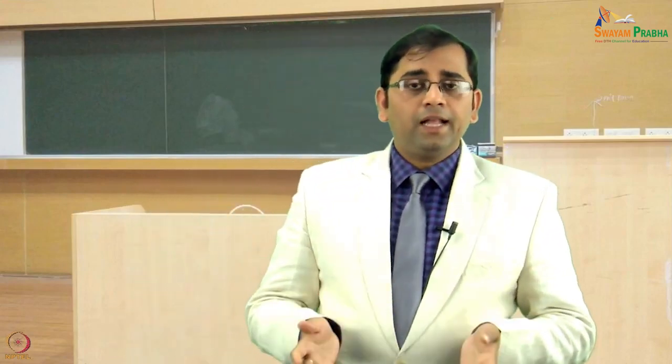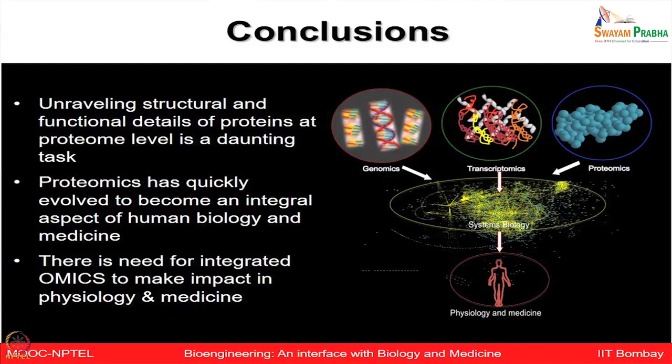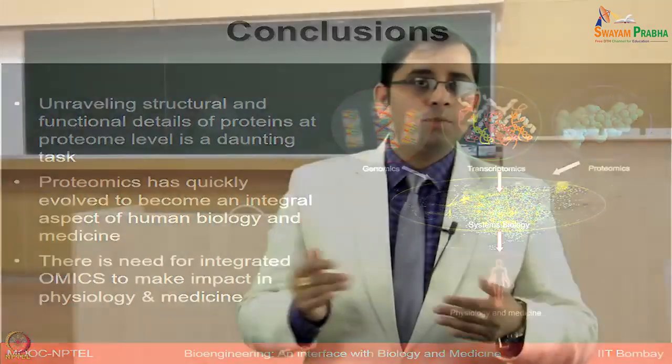In conclusion, today we tried to see the journey from genome to proteome, and some brief comparison of the key differences between genome and proteome. We also looked at many technologies which are part of studying the proteome, starting from gel-based platforms to different advancements in mass spectrometry platforms, different protein microarrays, label-free biosensors, and the emerging field of targeted proteomics. Unraveling the structural and functional details of proteins at the proteome level is a very daunting task. Proteomics has quickly evolved to become an integral aspect of human biology and medicine. However, there is still a need to integrate omics at different levels — genome, transcriptome, proteome, metabolome, and phenome — so that we can make a real impact in physiology and medicine. In subsequent lectures, we are going to talk about some of these proteomic technologies in much more detail, with certain lab sessions. Thank you very much.